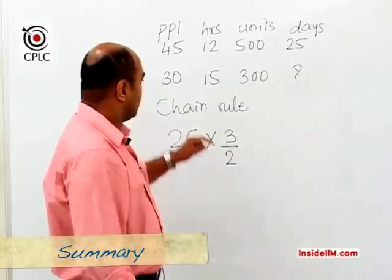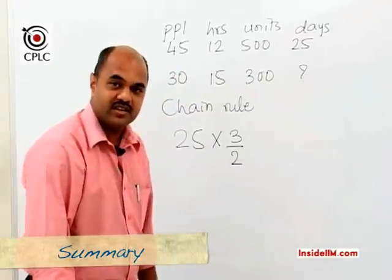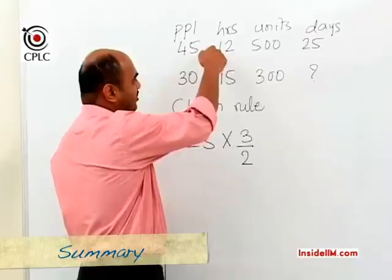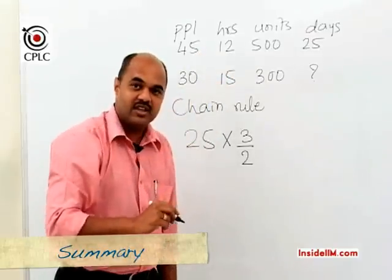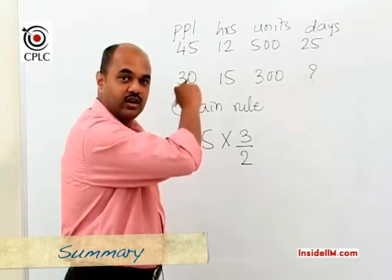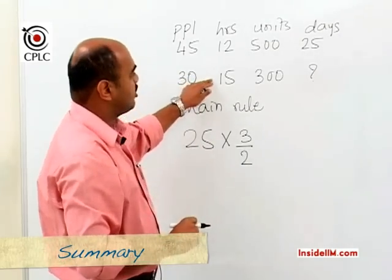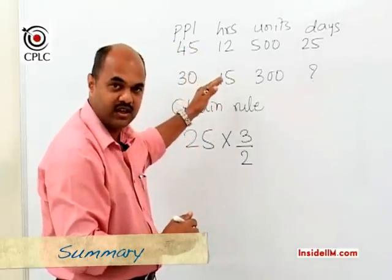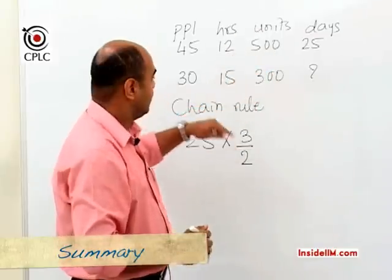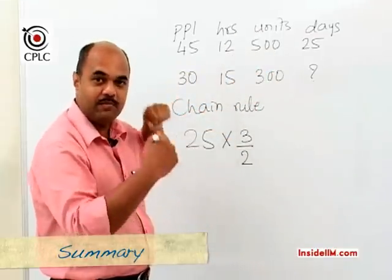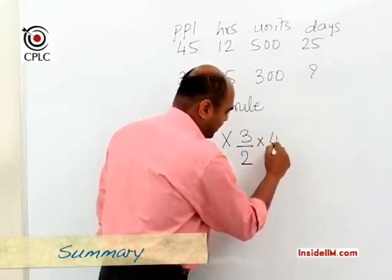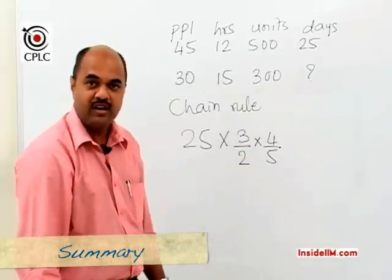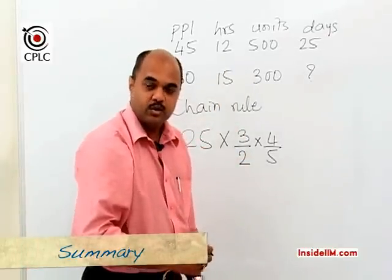Next, the number of hours changes from 12 to 15; treating these as 4 and 5, the hours have become 5/4 of earlier. Since hours are inversely proportional to days — more hours per day means fewer days required — the effect is that the number of days becomes 4/5 of earlier. So we multiply further by 4/5.